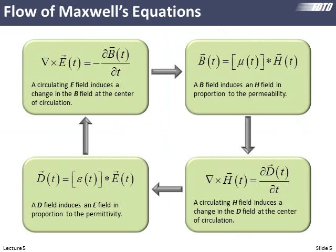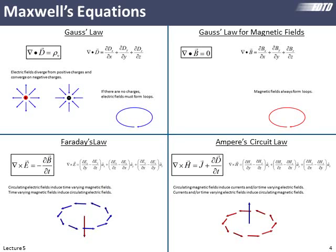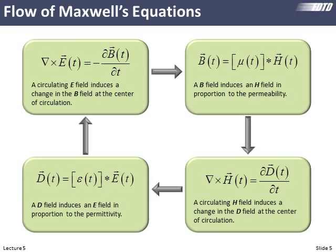We discussed the flow of Maxwell's equations as FDTD sees it. In reality these are all coupled and happening simultaneously, but in FDTD we look at this as a sequence of events. We calculate the curl of E and update the B field, then calculate H from the constitutive relation, calculate the curl of H and update D, then calculate E from the constitutive relation — and we're back to updating B. We keep walking around this loop: update H from B, update D from H, update E from D, and so on.